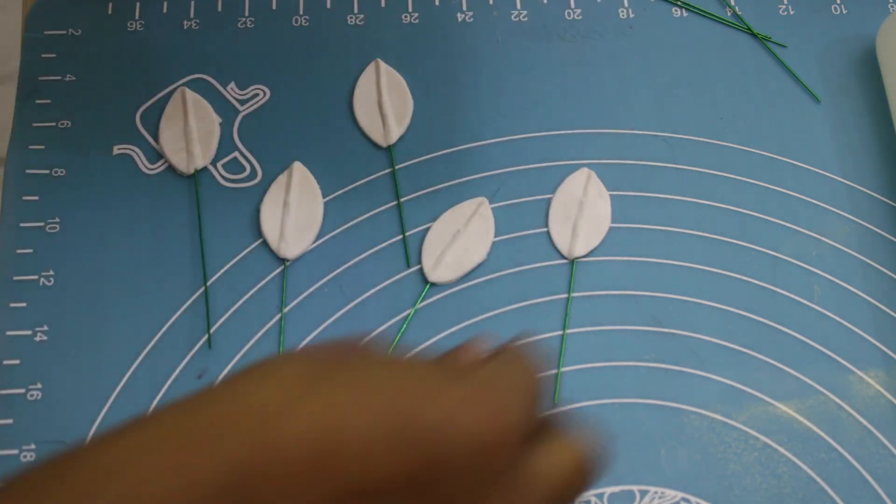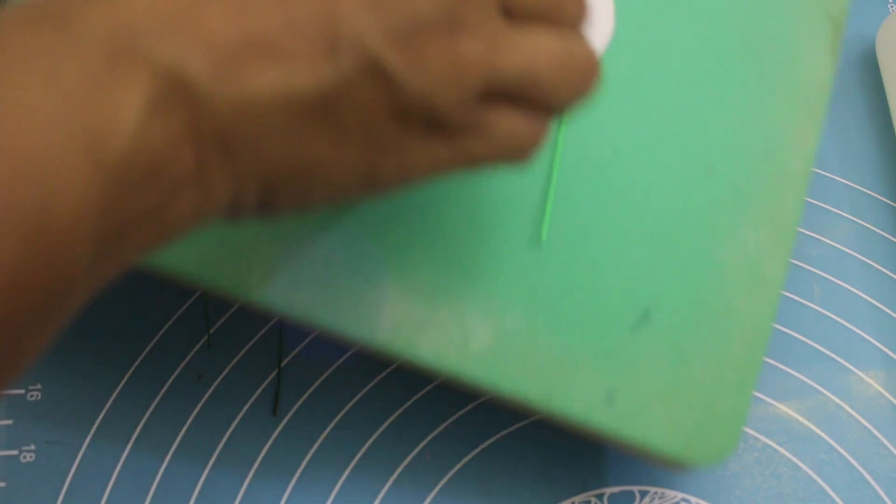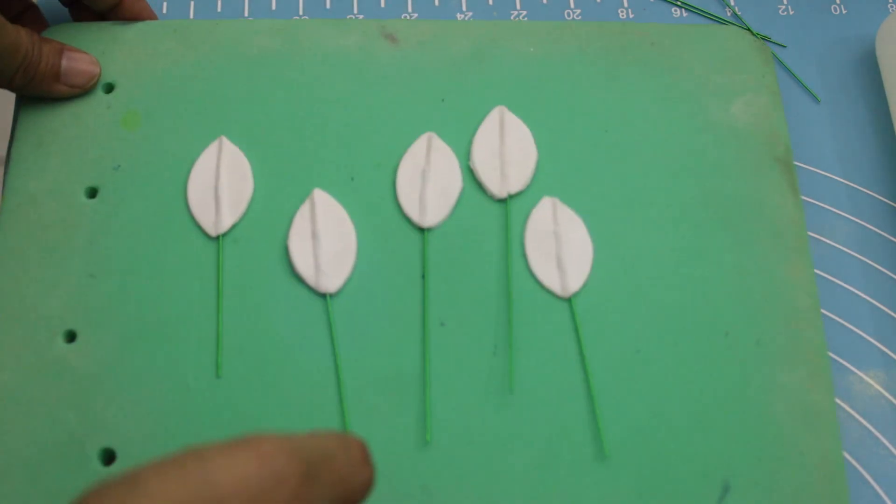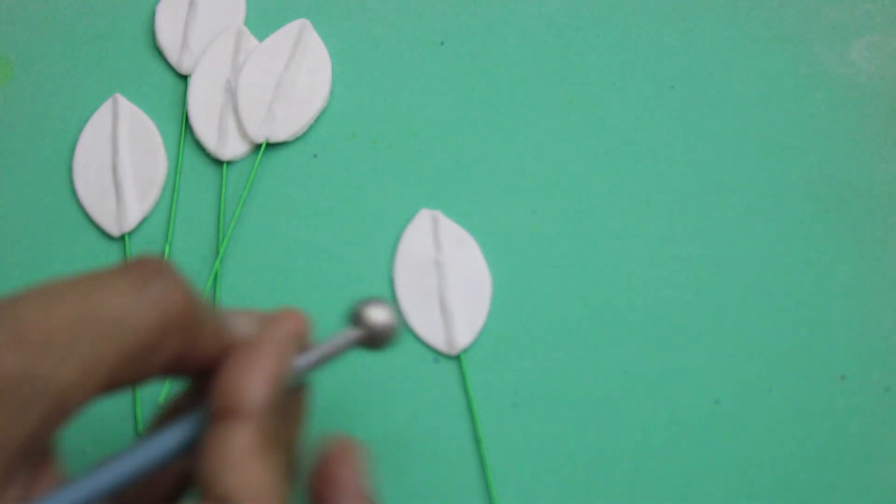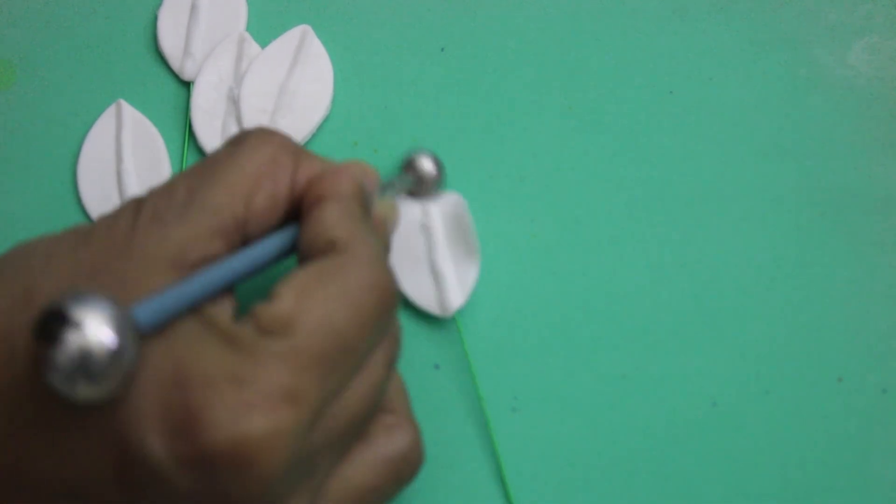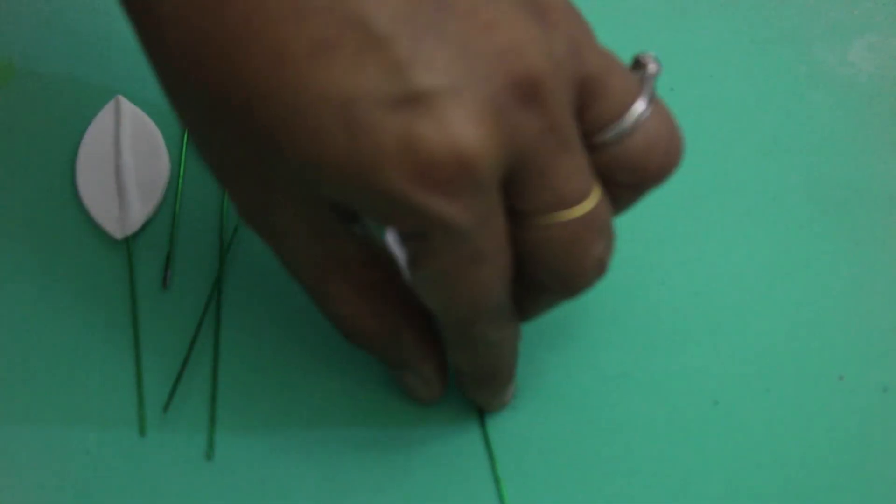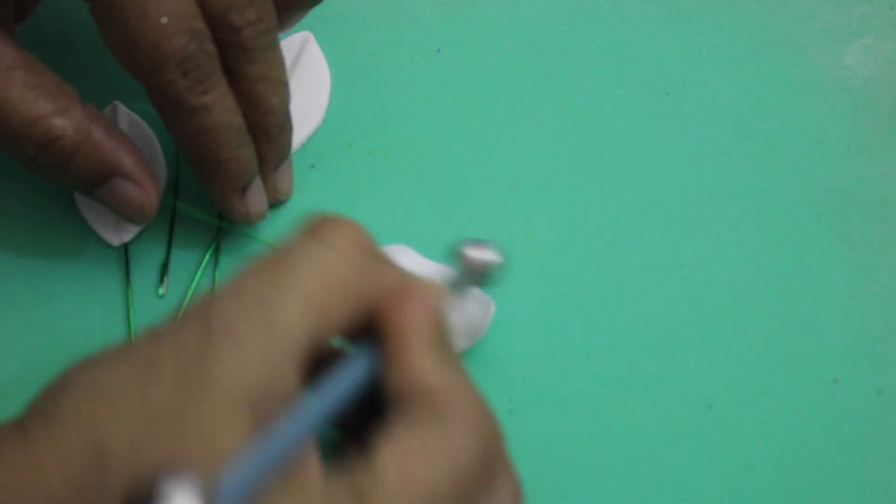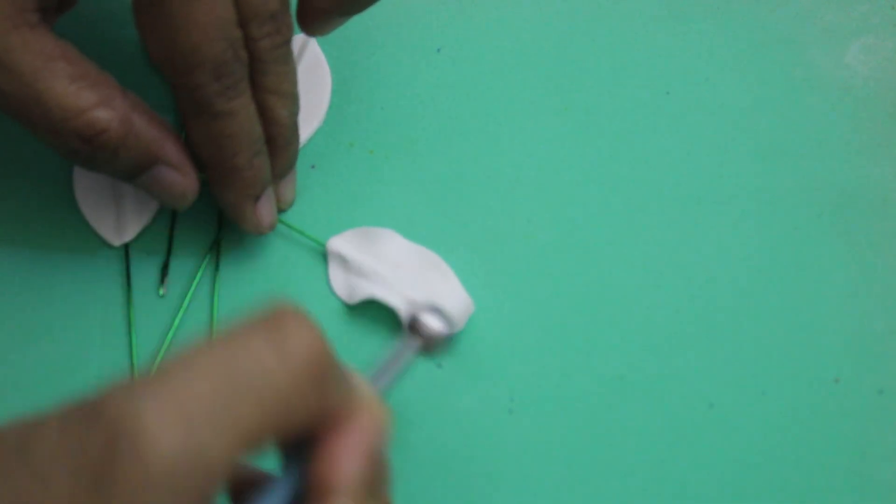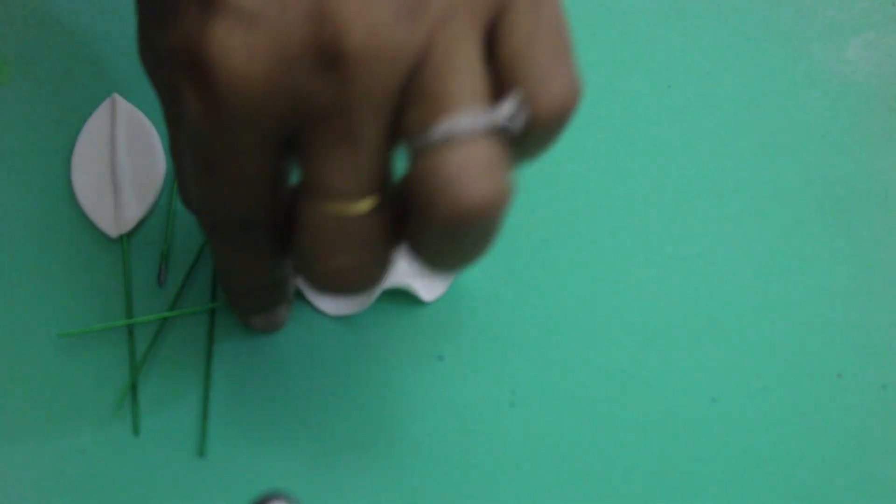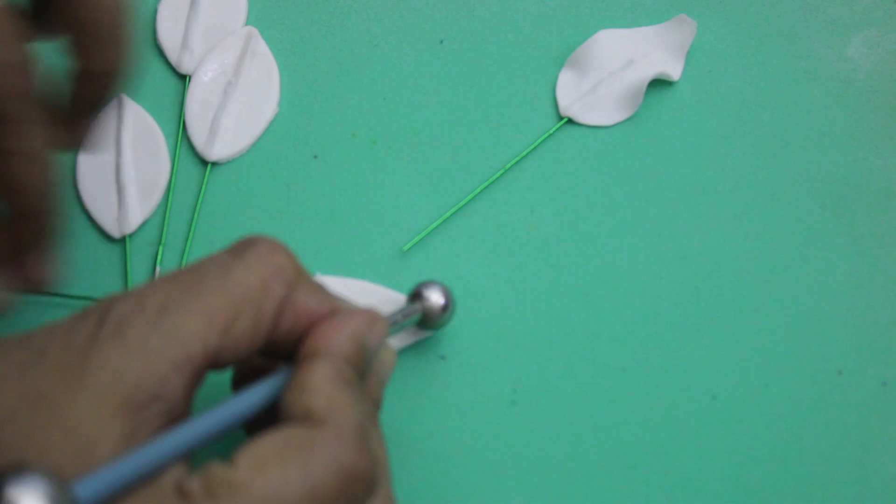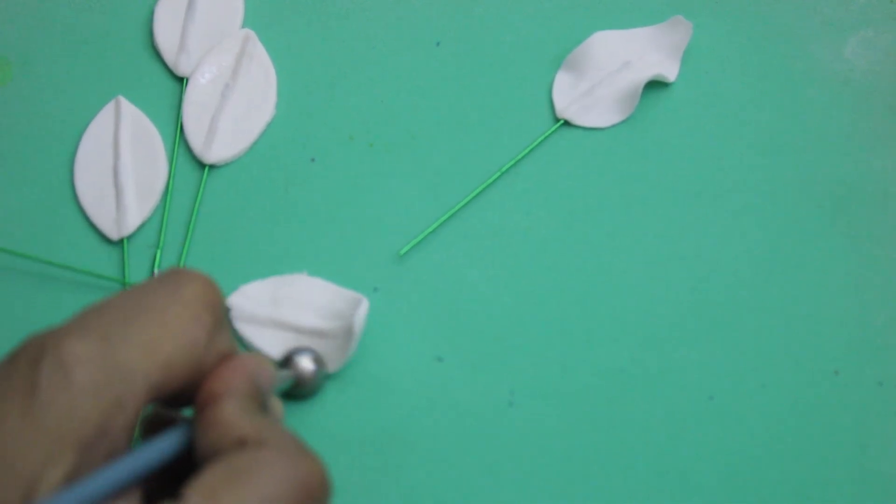Use the foam pad and place them here. Let me show you one. Make it a little bit longer, so push it outside and make the edges thin. It's very easy.